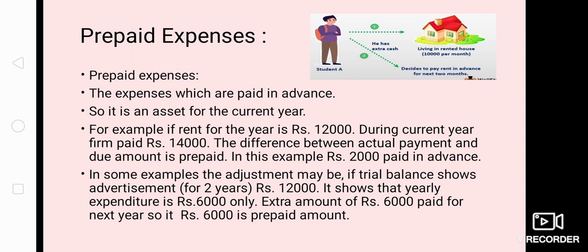Because this is the due amount of the next year but was paid in this year, we will show it as a due amount in the next year's profit and loss account. In the current year, the treatment is that we show 6,000 rupees on the asset side only. But in the next year, we are going to show it as an expenditure.